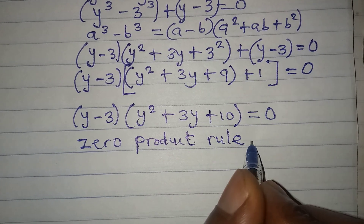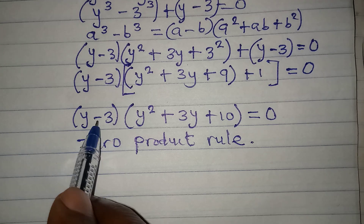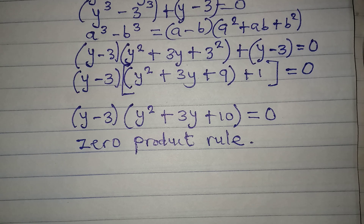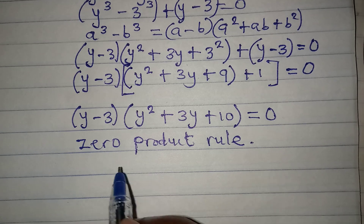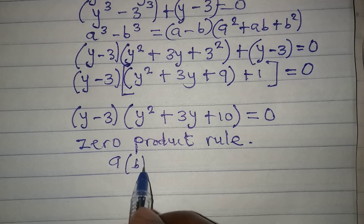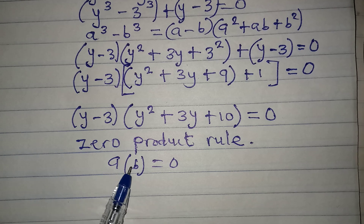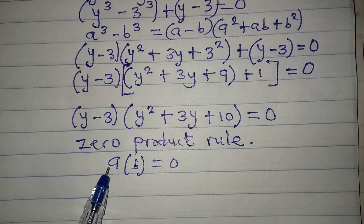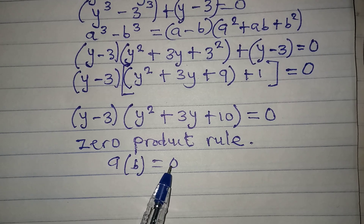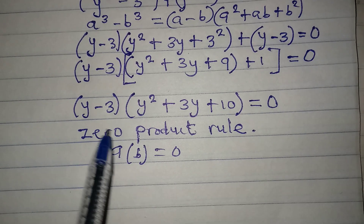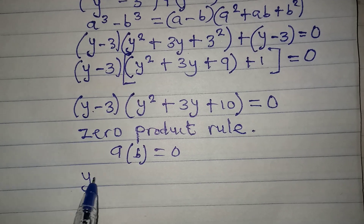Now apply the zero product rule. It says that either one or both factors equal zero, because if you have a times b equal to zero, then if a is zero you still get zero, and if b is zero multiplied by a you still get zero, and if both are zero, zero times zero is still zero.